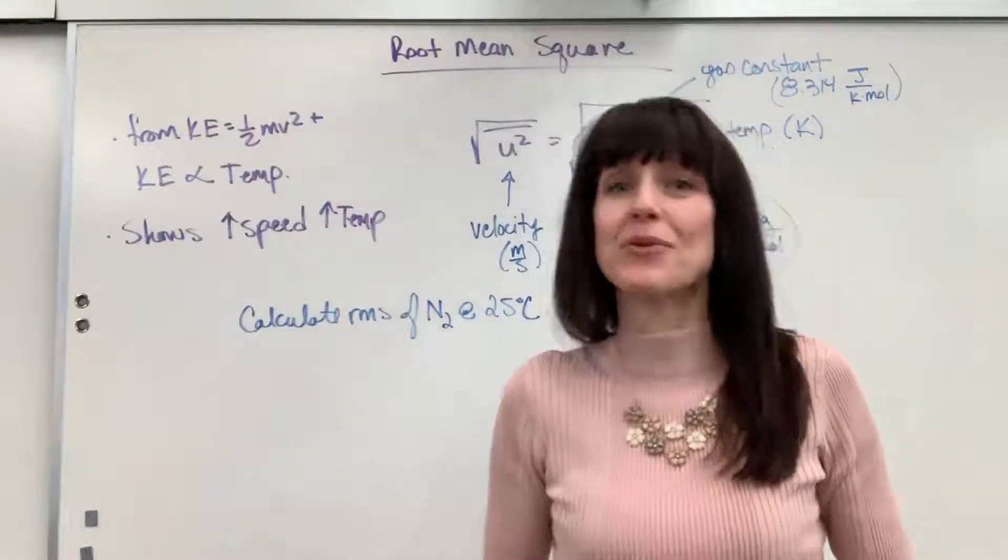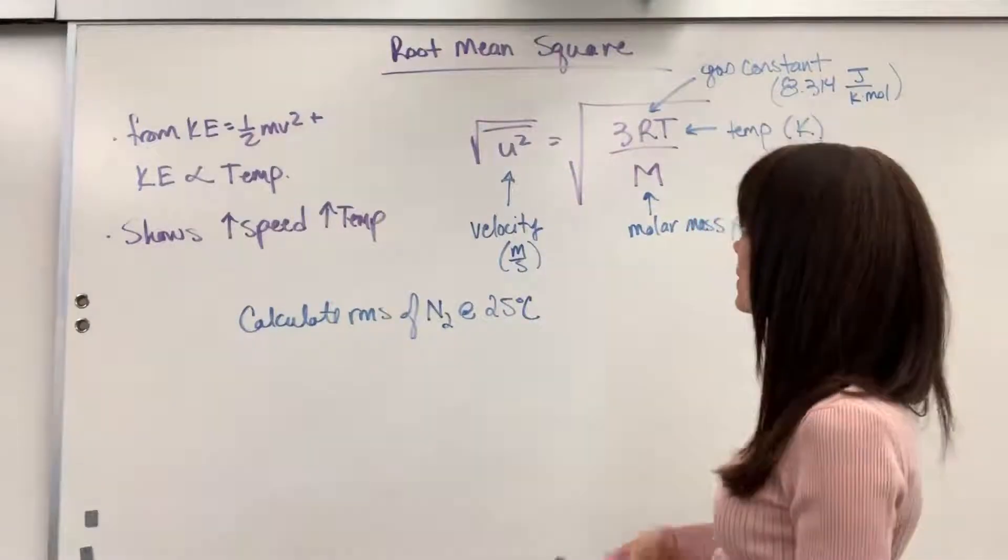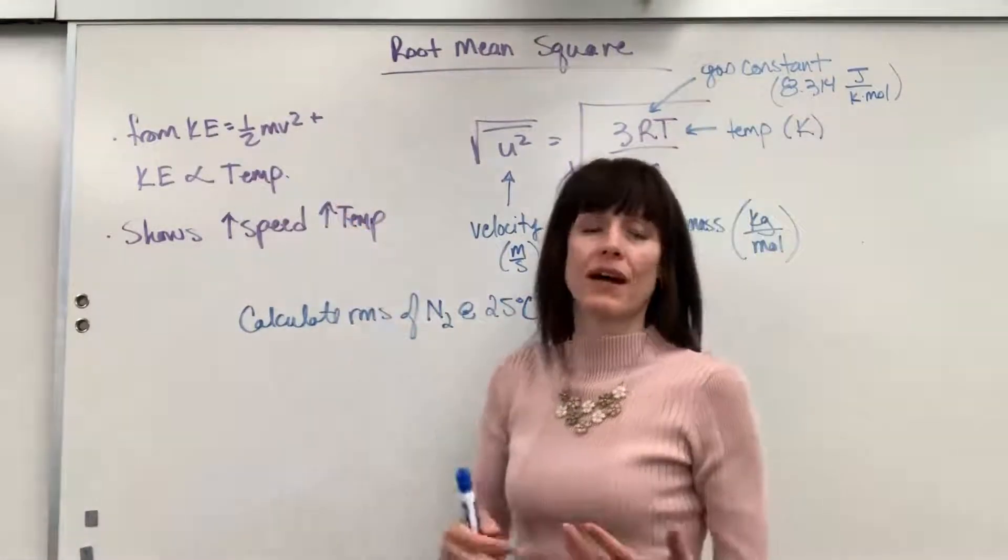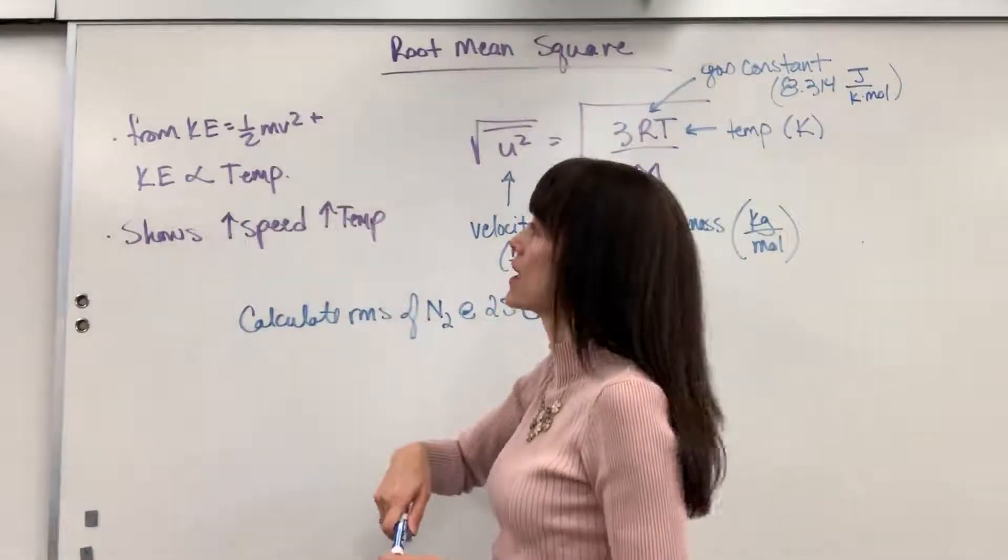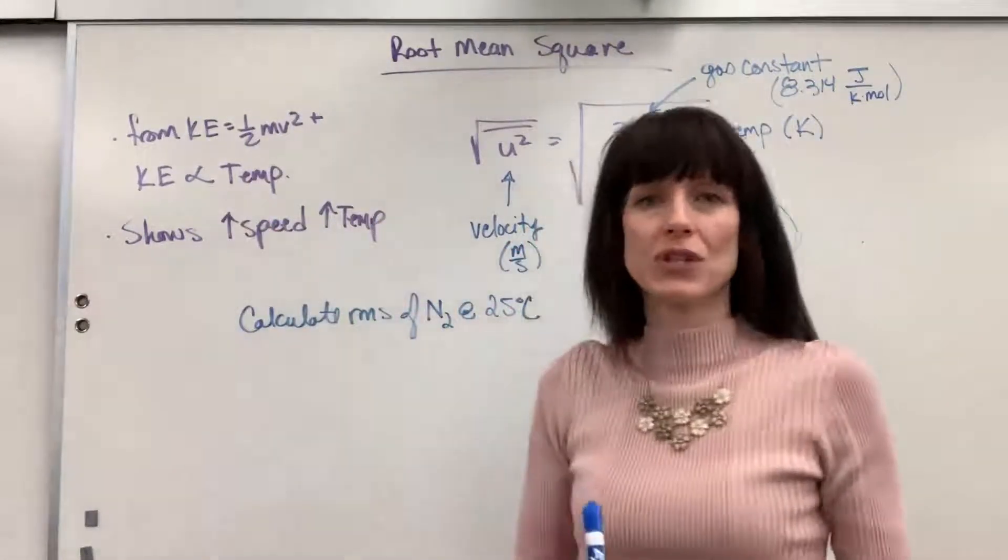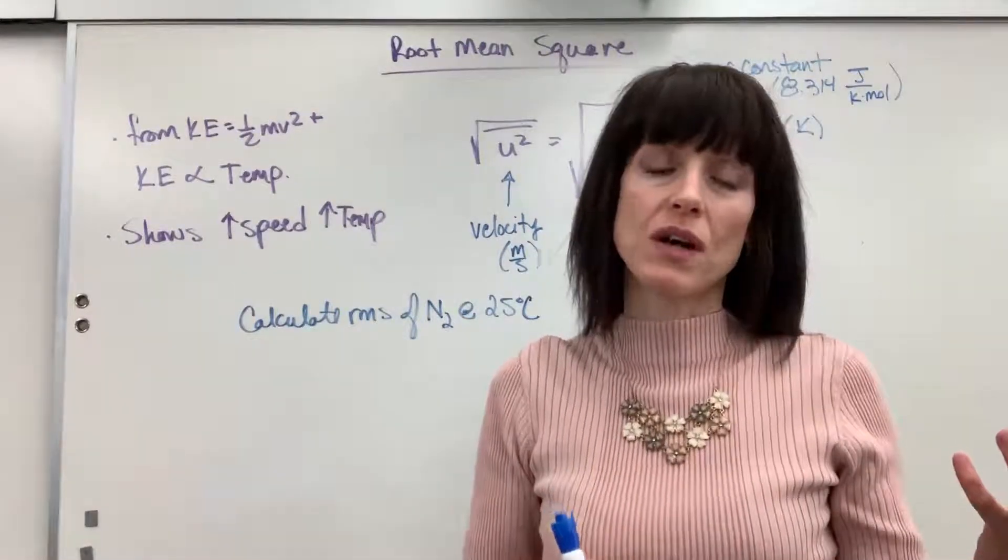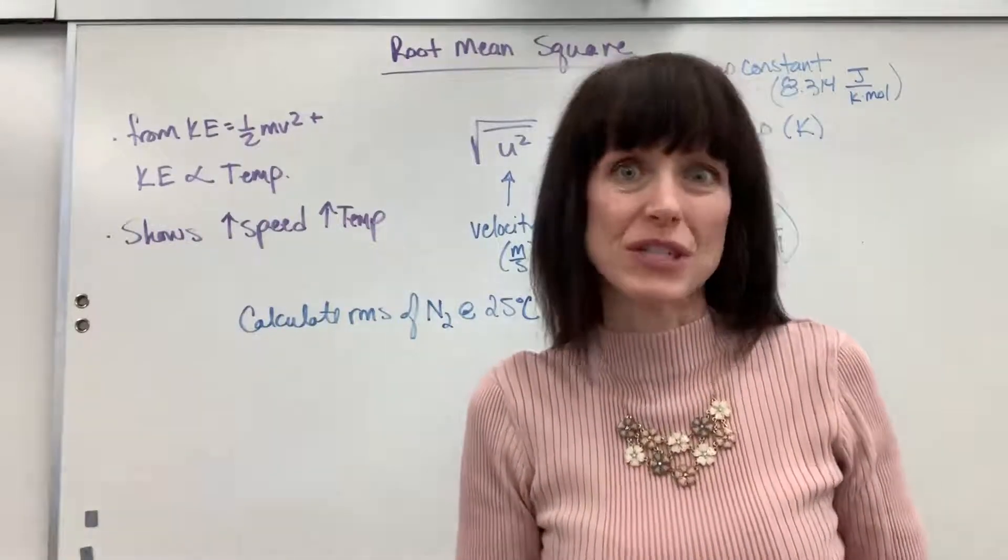Hi, we're going to talk about root mean square. So this is the speed of gas molecules right here. And where it comes from is the fact that kinetic energy is one half mass times velocity squared. And we also know that temperature and kinetic energy are directly proportional. So as you increase the temperature of a gas, those molecules are going to move faster because they have more energy.